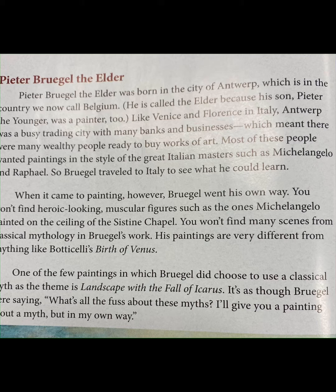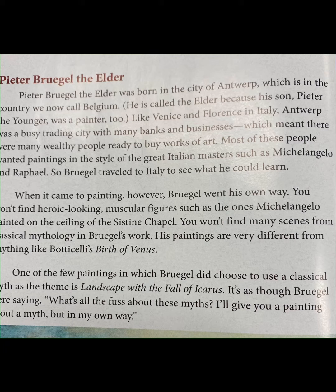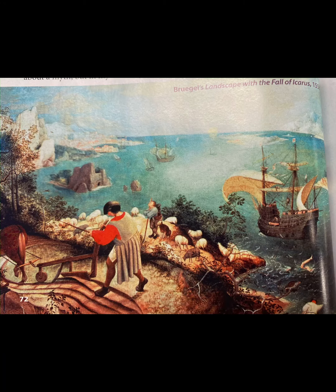So Bruegel traveled to Italy to see what he could learn. When it came to painting, however, Bruegel went his own way. You won't find heroic-looking, muscular figures such as the ones Michelangelo painted on the ceiling of the Sistine Chapel. You won't find many scenes from classical mythology in Bruegel's work. His paintings are very different from anything like Botticelli's Birth of Venus. One of the few paintings in which Bruegel did choose to use a classical myth as the theme is Landscape with the Fall of Icarus, 1558 CE.